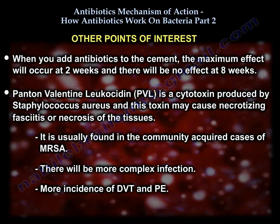When you add antibiotic to cement, the maximum effect is at two weeks and there is no effect at eight weeks. Panton-Valentine Leukocidin (PVL) is an important toxin produced by Staph aureus. This toxin may cause necrotizing fasciitis or significant tissue necrosis. It is found more in community-acquired MRSA, which has more complex infections and a higher incidence of DVT and PE.